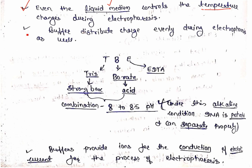Buffer distributes charge evenly during electrophoresis — this is also important. When electricity is applied, some molecules break apart and form ions; the buffer ensures these ions are uniformly distributed. This uniform distribution is a key property of the buffer. TAE and TBE buffers generally come as 50x or 20x stock solutions from the market, and we dilute them with distilled water to make 1x or 1.5x working solutions.